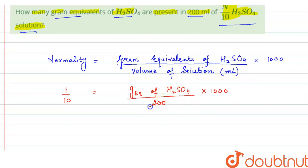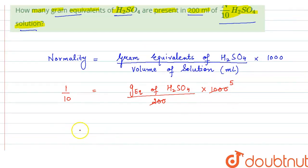So, when we cancel out this 200 and 1000, here we get 5.